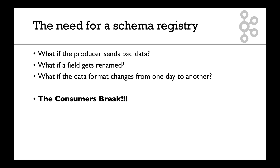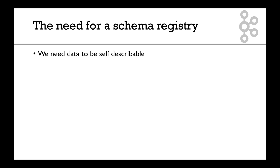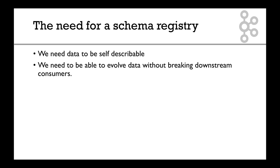Big companies such as Uber have experienced that sort of problem and really had trouble making up for it. So we need data in itself to be self-describable. We also need to be able to evolve data over time on the producer side without breaking the consumers downstream. So we need schemas and we need a schema registry.